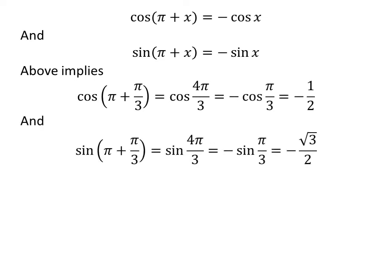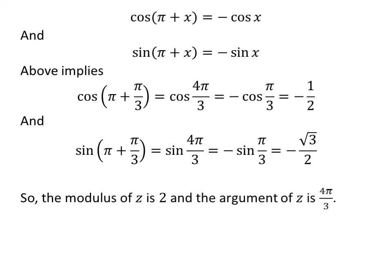So, this implies cosine of 4 times pi upon 3 is equal to minus half and sine of 4 times pi upon 3 is equal to minus square root of 3 upon 2. Therefore, the modulus of the complex number minus 1 minus i times square root of 3 is 2, and the argument is 4 times pi upon 3.